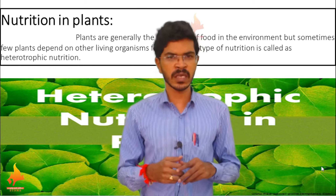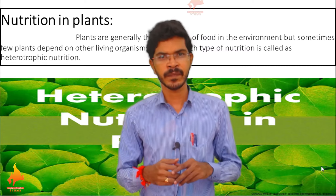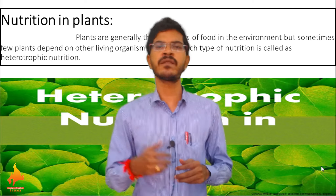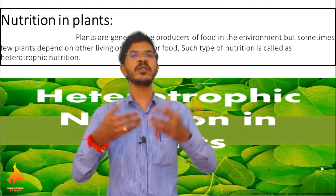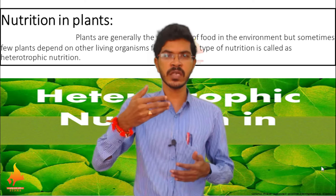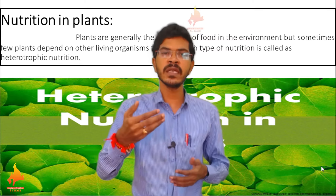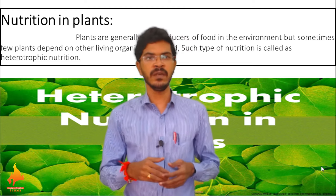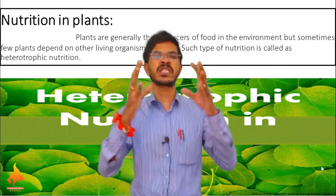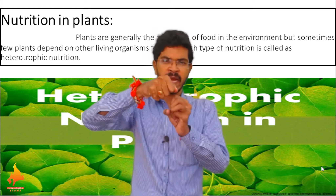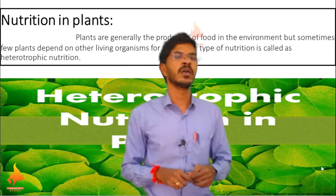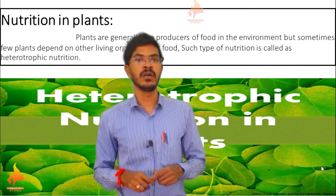What makes them depend on other living organisms for food? It is due to the lack of chlorophyll. Some plants depend on other living organisms for food. Others are depending on other living organisms because they are growing in nitrogen-deficient soil and they need nitrogen for their survival. So they have come up with the strategy of trapping insects, killing them, and drawing the nutrients out of them for their survival. So in this lesson we are going to discuss about such types of vampire-like plants.